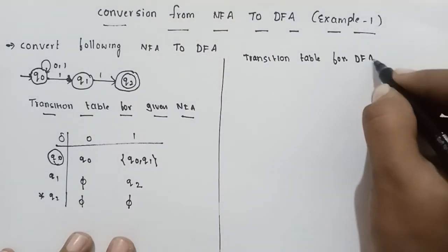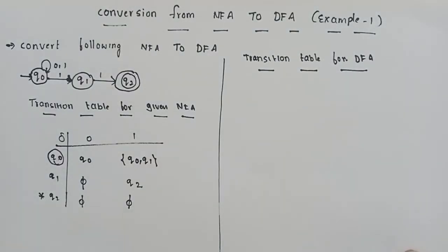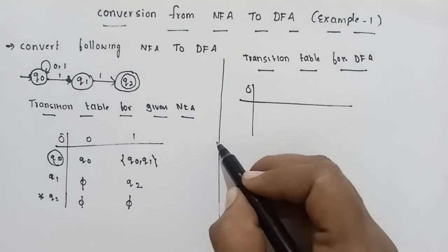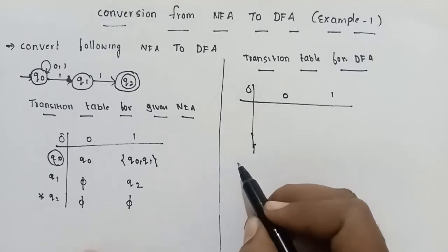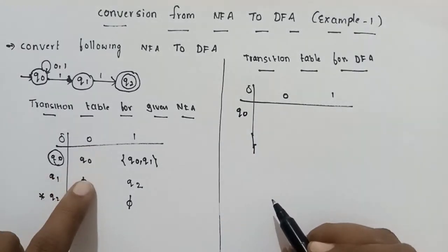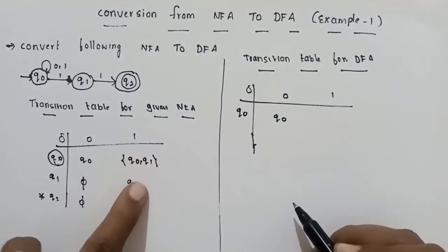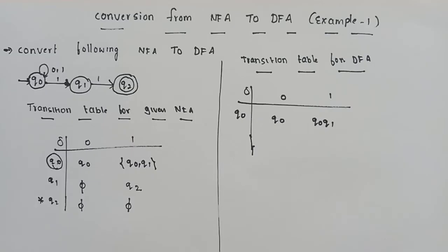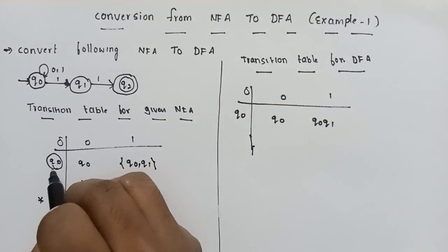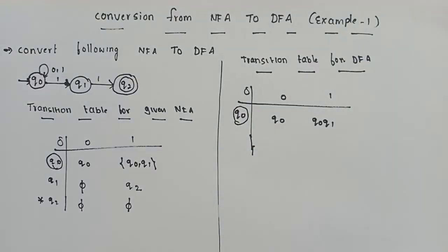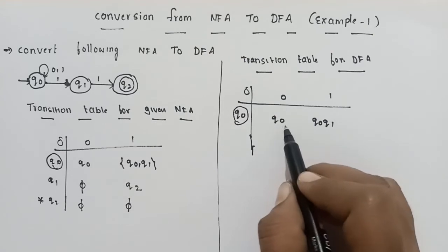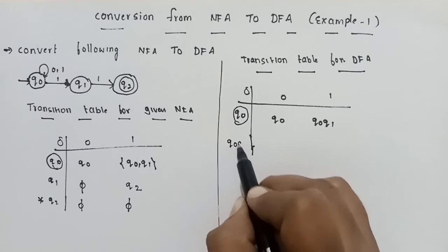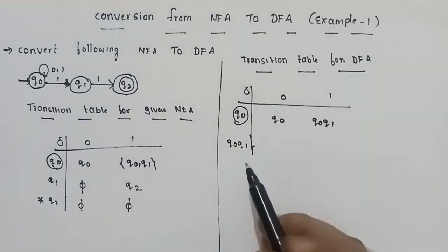Now we build the DFA transition table. The DFA construction process involves expanding each state set. We list input symbols 0 and 1. We start with the initial state Q0. Q0 on input 0 goes to Q0, and Q0 on input 1 goes to Q0 and Q1 — we consider this as a single combined state {Q0, Q1}.